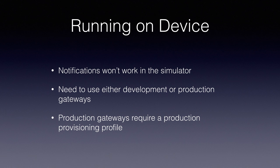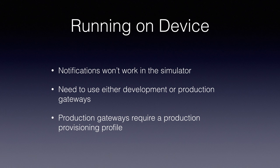Running on your device — not the simulator — push notifications have the concept of a sandbox environment and a production environment, like Game Center or in-app purchases. The operating system chooses the environment based on your provisioning profile. A development profile gives you the sandbox gateway; an ad hoc, enterprise, or App Store profile gives you the production gateway. Tokens are either for the production or development gateway — sending a development token to the production gateway won't work, and Apple will provide feedback about that failure. They've recently redone the API, so it's much nicer now.